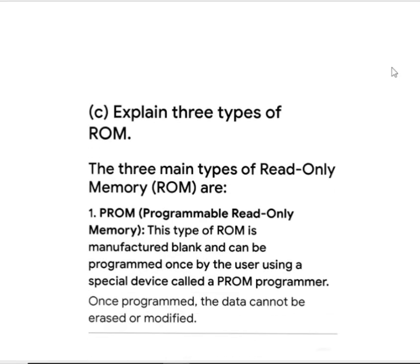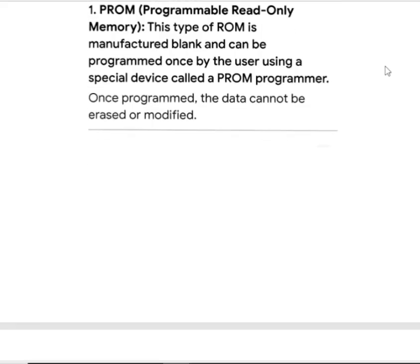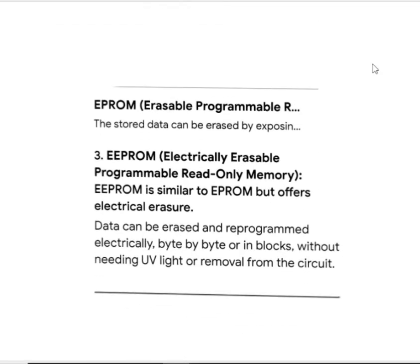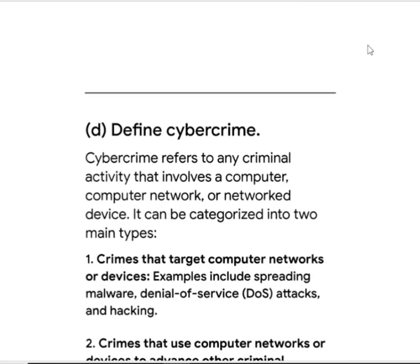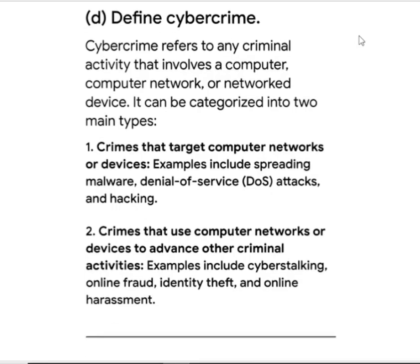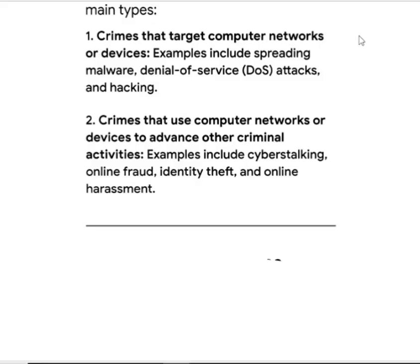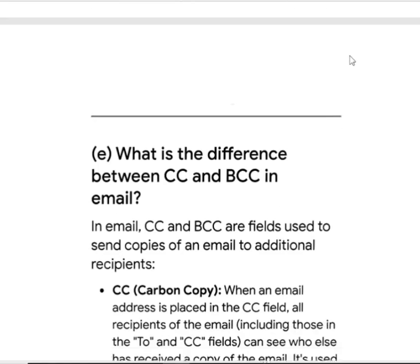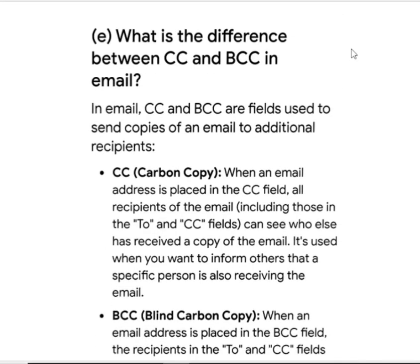Write a short note on the three types of ROM: ROM, PROM, and EEPROM — Electrically Erasable Programmable Read-Only Memory. Different types of cybercrime: crimes that target computer networks or devices, and crimes that use computer networks to perform other criminal activities. What is the difference between CC and BCC in email? CC is Carbon Copy and BCC is Blind Carbon Copy.